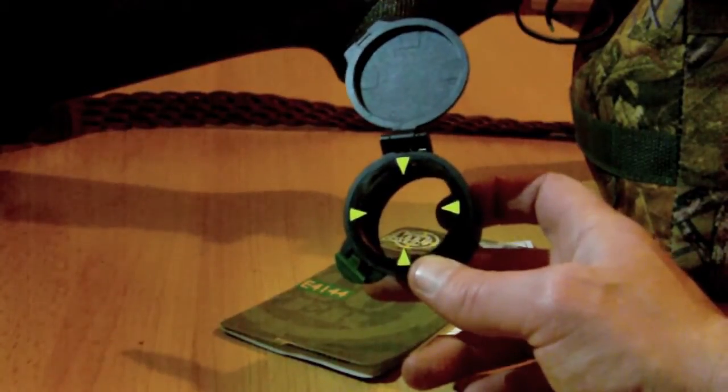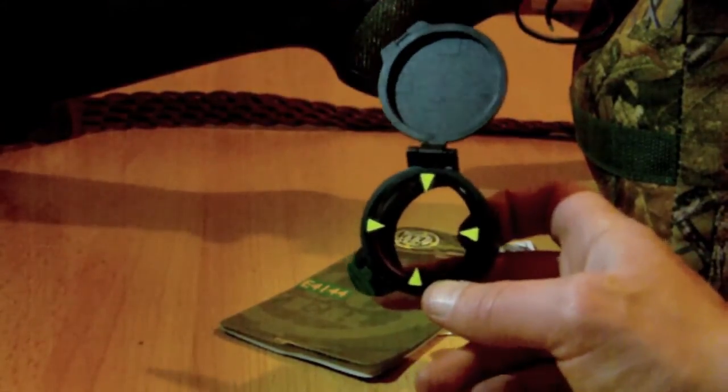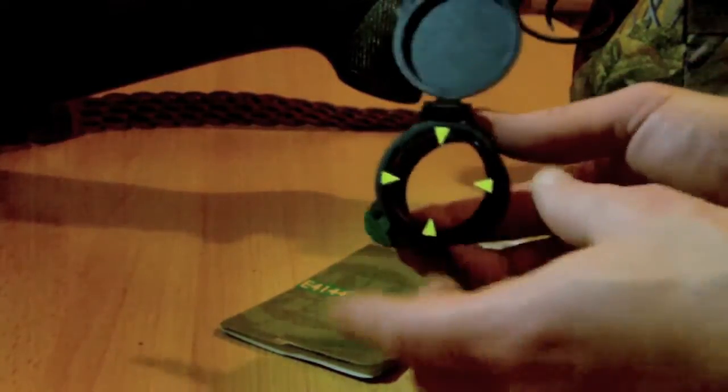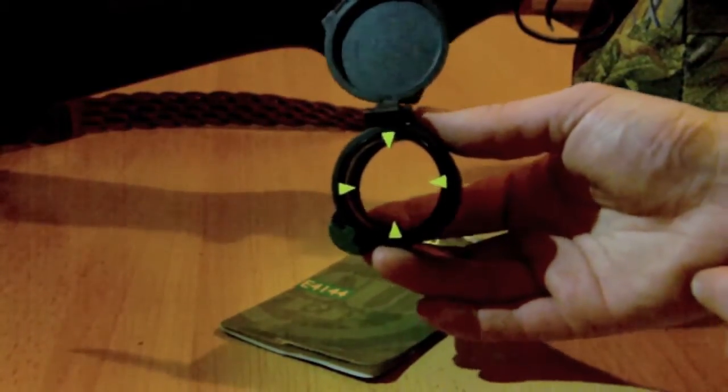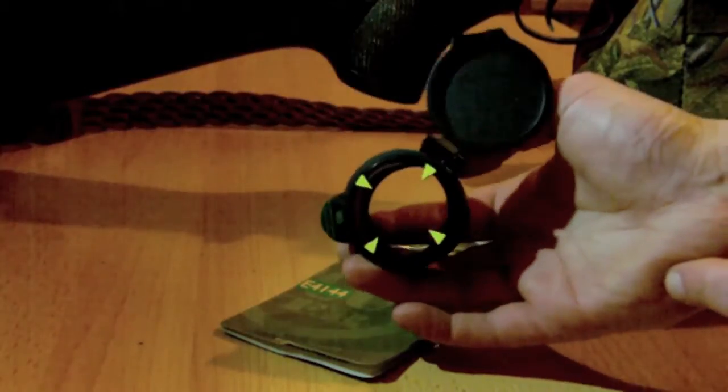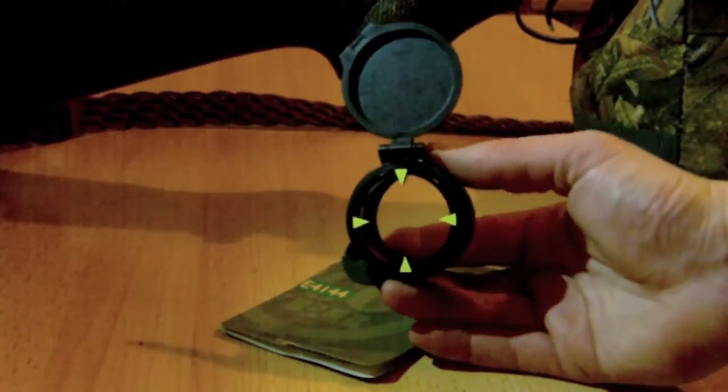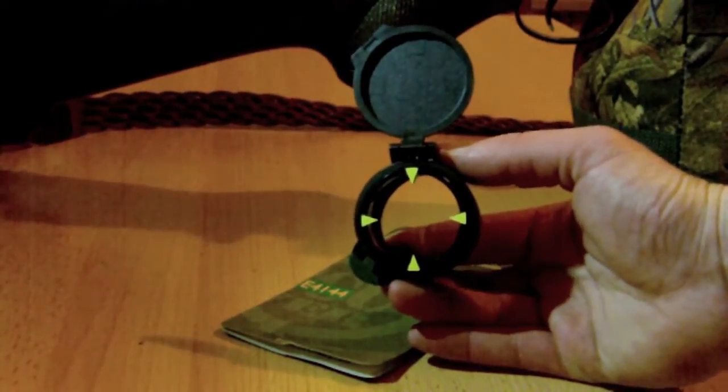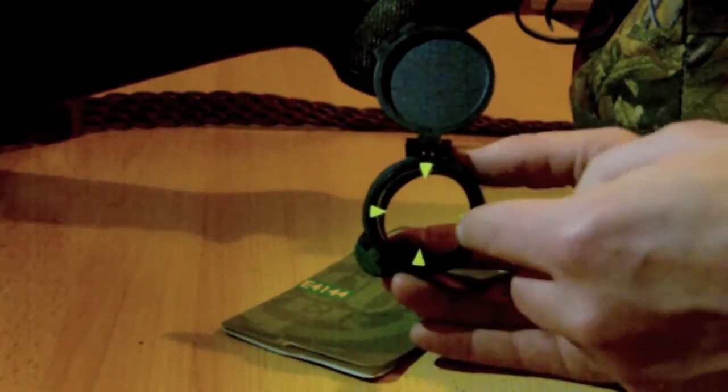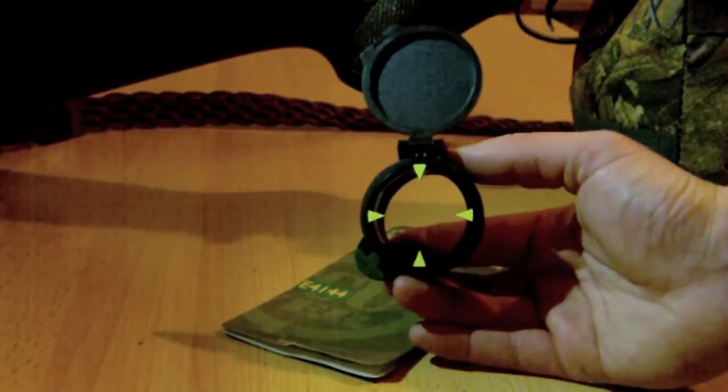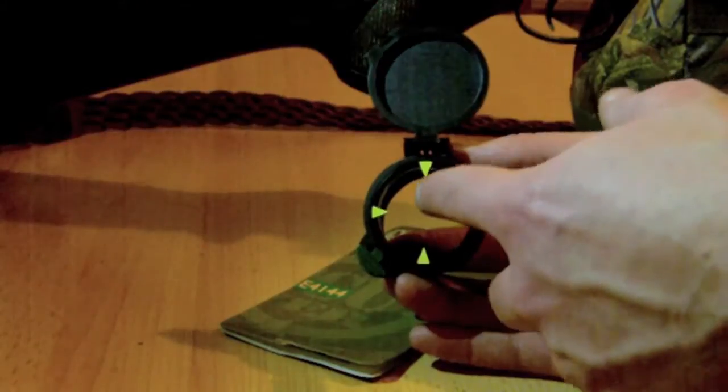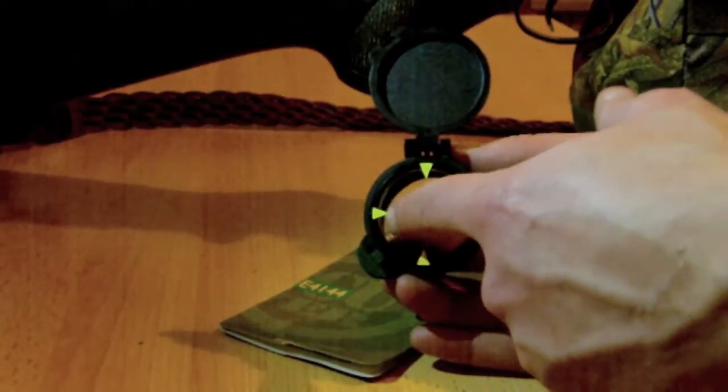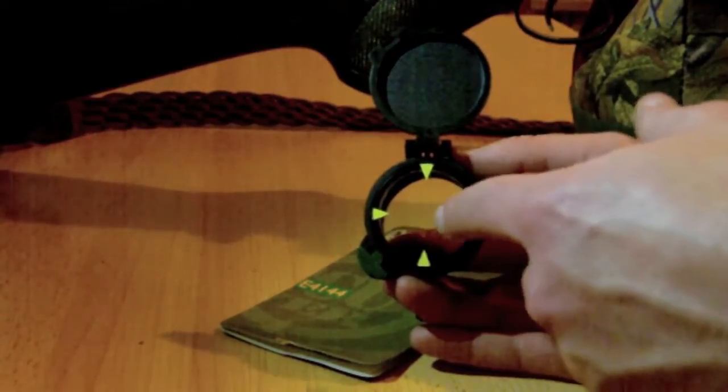The other thing that it does is it stops you having what's known as cant error. So when you're looking down the scope and if you tilt the gun left or right by accident because you haven't brought the gun up to you properly without realizing it, again, these arrows won't be properly lined up.